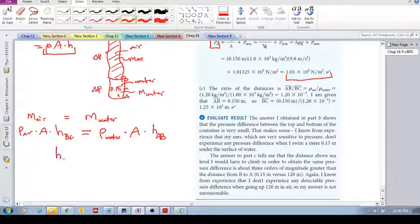So h_BC then simply, and by the way these areas can just cancel, is equal to the height of AB multiplied by the density of water divided by the density of air.